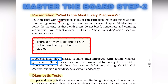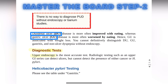The patient will describe the pain as dull, sore, and annoying — meaning a consistent pain. Although the most common cause of upper GI bleed is peptic ulcer disease, a high-yield point to remember is that there is no way to diagnose peptic ulcer disease without endoscopy or barium studies.